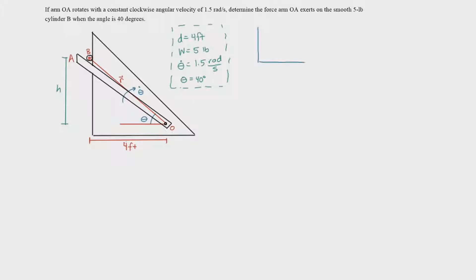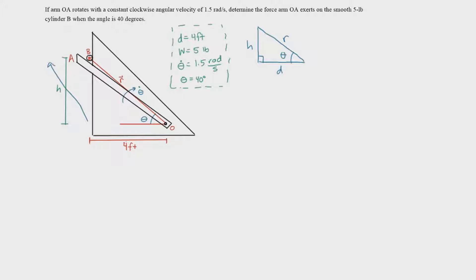Let me create that right triangle. It has R as the hypotenuse, H as the vertical side, a right angle, and D which is 4 feet as the horizontal side. The angle between R and D is theta — the angle at which the arm rotates. D is constant because the cylinder only moves vertically. So we can say D equals R cosine of theta, and this is constant.